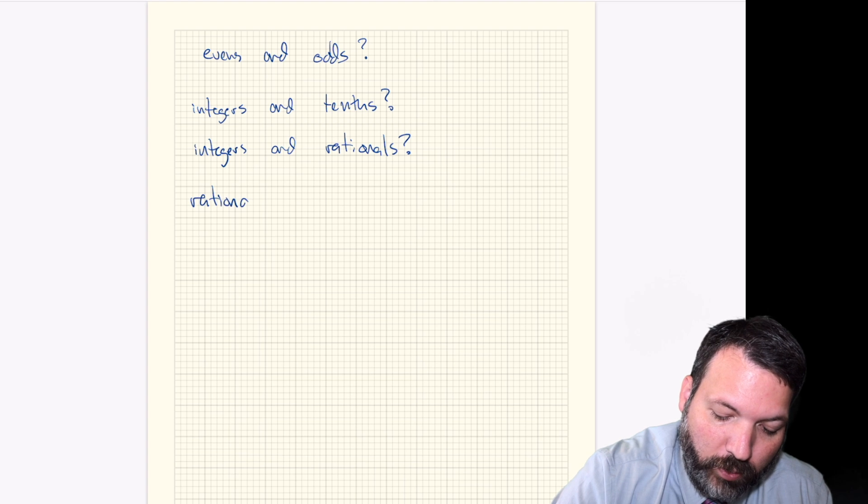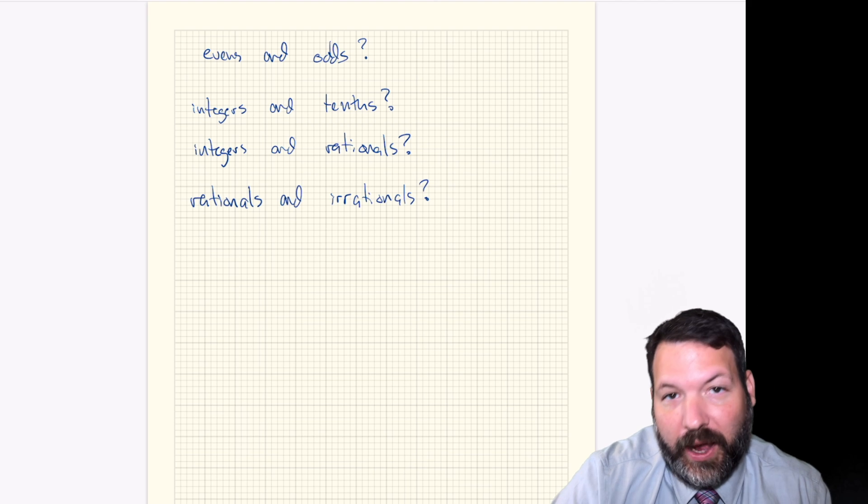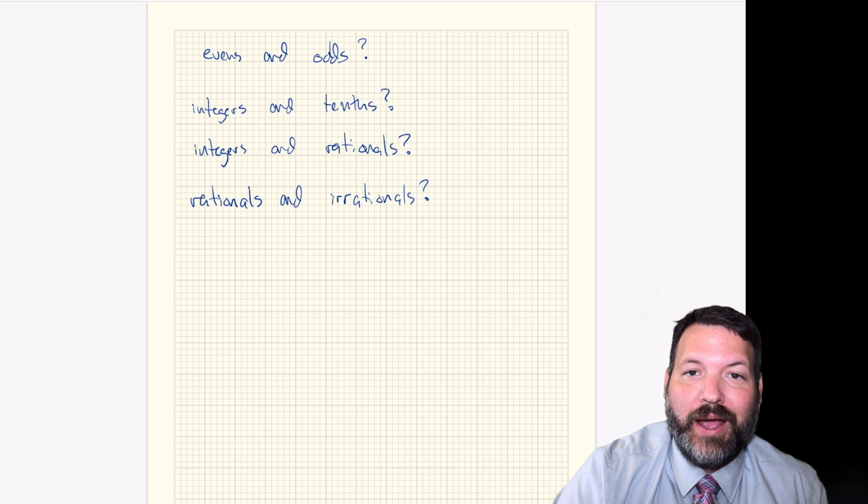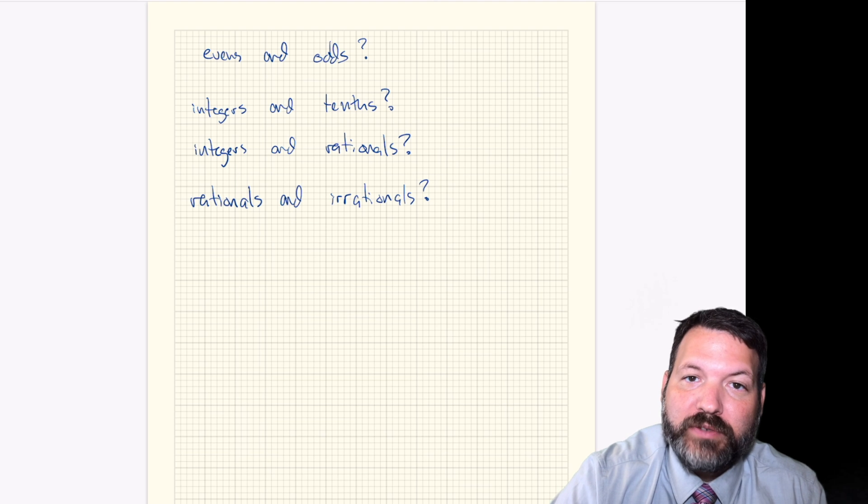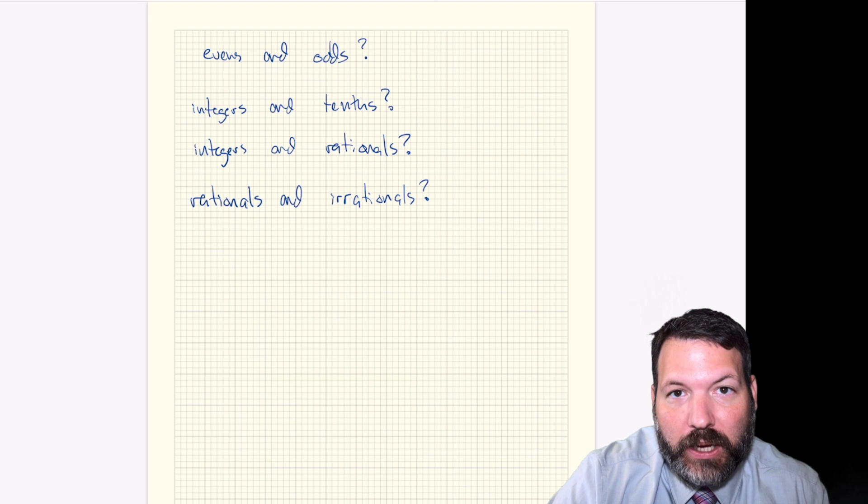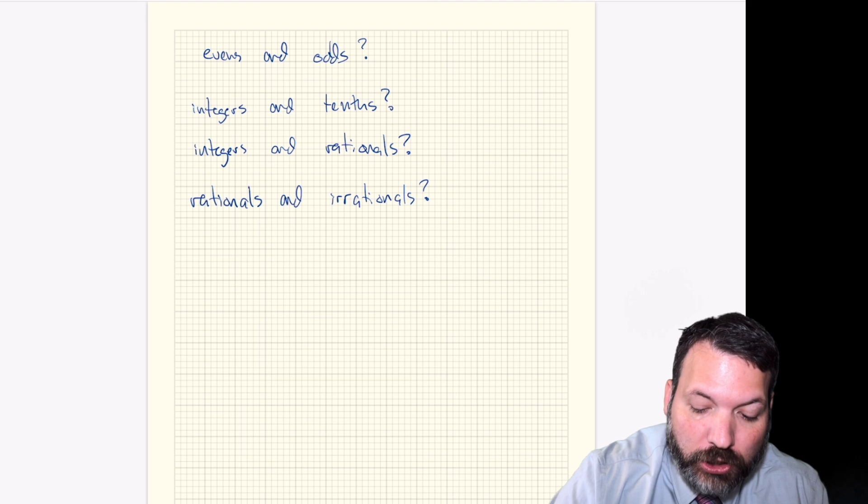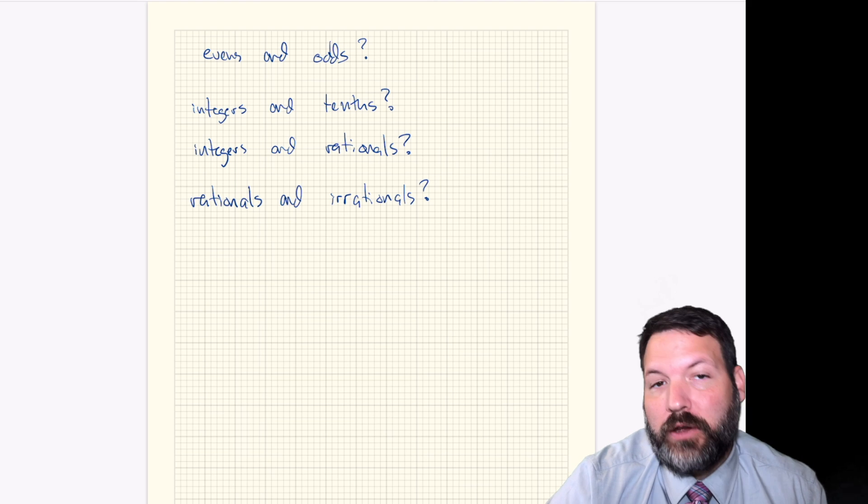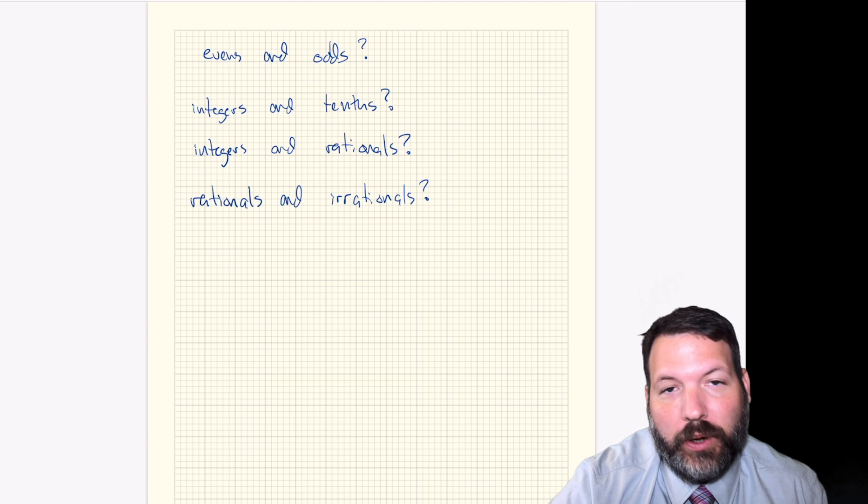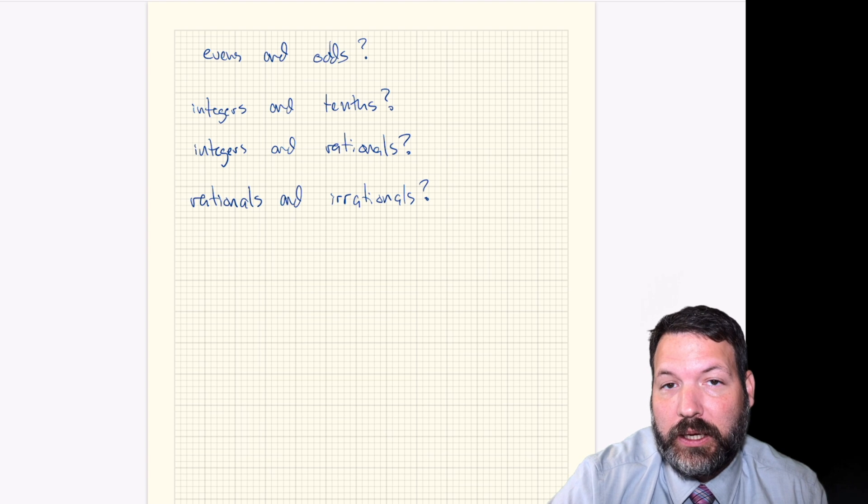And then finally, we might move on to, could we show that the rationals and the irrationals are the same size? So the rationals, again, all the fractions, all the ratios, but the irrationals are all those weird numbers like pi or the square root of two that when you express them as decimals, they never end, and they never repeat, and so they cannot be expressed as the ratio between two integers. Using a function, we can figure out the answers to these four particular questions, and that's what I want you to try to do. Can you show me which of these sets are the same size and which of them are not, even though, of course, all of them are, in some sense, infinitely large?